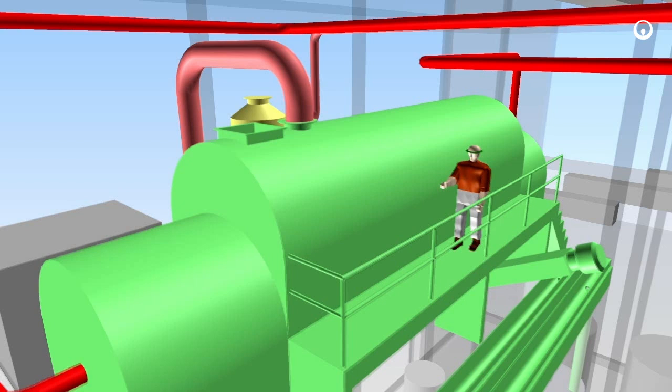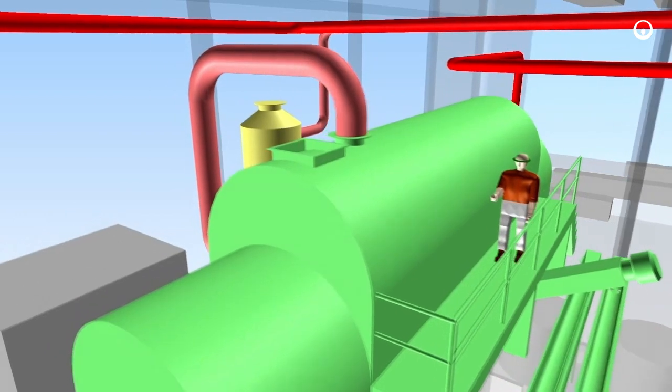We begin our tour with the pre-drying system where, prior to thermal oxidation, dewatered sludge is dried. The dryer is designed to increase the sludge dryness to achieve thermal oxidation without the need for auxiliary fuel.